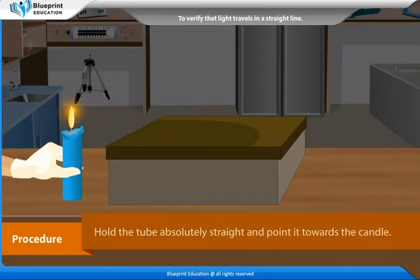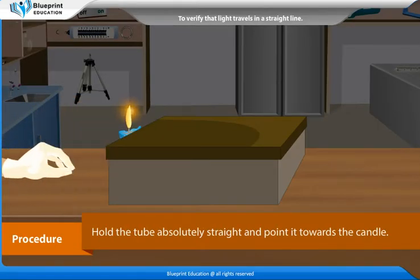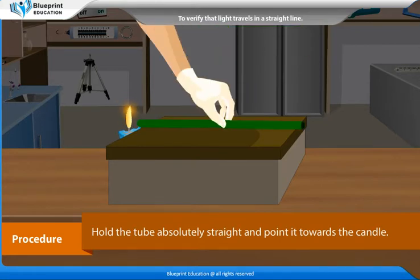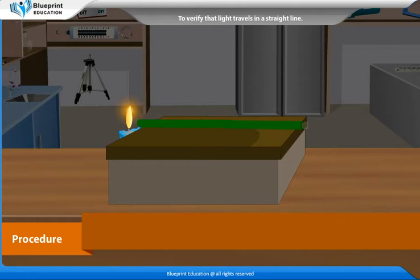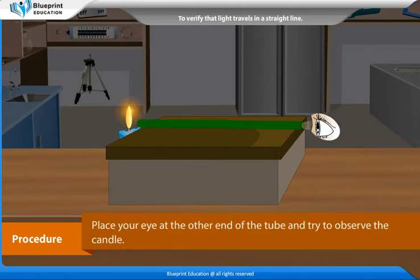Procedure: Hold the tube absolutely straight and point it towards the candle. Place your eye at the other end of the tube and try to observe the candle.